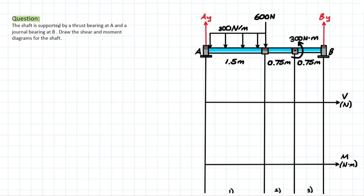The shaft is supported by a thrust bearing at A and a journal bearing at B. Determine the shear and moment diagram for the shaft. The problem seems fairly straightforward at first, but we begin to notice that there are multiple different external forces applied to our span, and we know that this is a problem based on what we did previously using the section method.